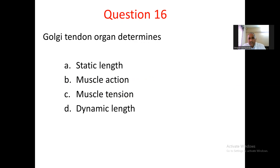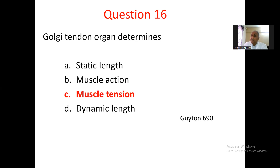Question number 16. Golgi tendon organ determines: A. static length, B. muscle action, C. muscle tension, D. dynamic length. Static length and dynamic length are monitored by muscle spindles through their static and dynamic fibers. Muscle action encompasses both contraction and tension. The specific term here is muscle tension. Golgi tendon organs are activated by tension created in the tendon — that is why they are called Golgi tendon organs. These receptors detect muscle tension to prevent excessive stretch and rupture. Refer to Guyton page 676.